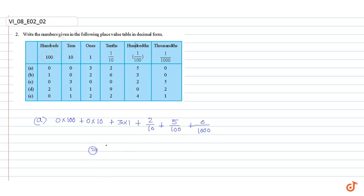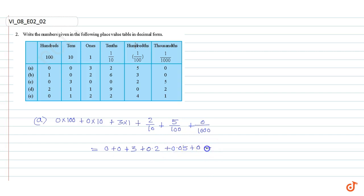This is equal to 0 + 0 + 3 + 0.2 + 0.05 + 0, which equals 3.25.